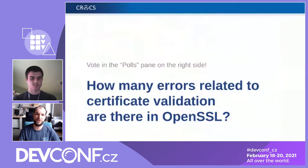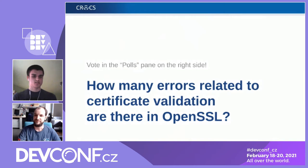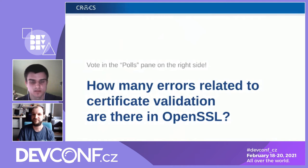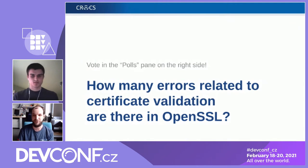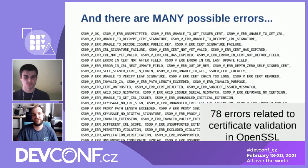Which brings us to the first question we want to ask you. If you were to guess, how many errors related just to certificate validation do you think there are in OpenSSL? Try to vote in the poll section on the right of the Hopin screen. Mostly going for 20 to 40 or 60 to 80, though I see that nobody thinks there are at most 20 errors. I can definitely say there is more than 20. The reality is that there are 78 errors just related to certificate validation in OpenSSL altogether.